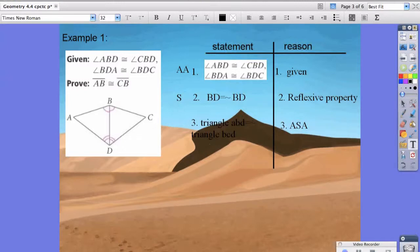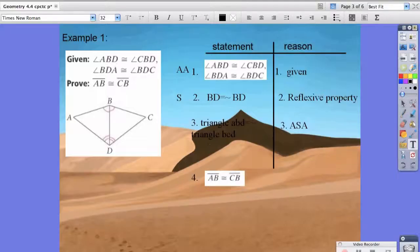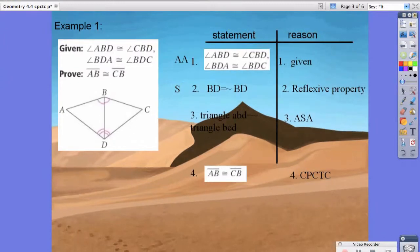Now that we've proven the two triangles are congruent, now we could say that line segment AB is congruent to line segment CB. So, we can say that this statement is true because of CPCTC. Again, step three, we have to prove the two triangles are congruent first. And then in step four, we could say the two sides are the same because of corresponding parts of congruent triangles are congruent.